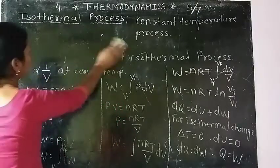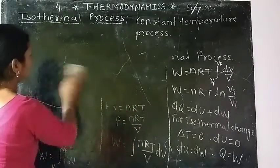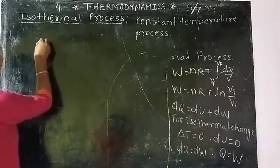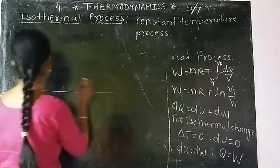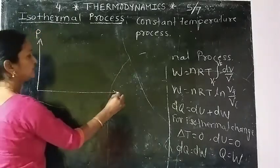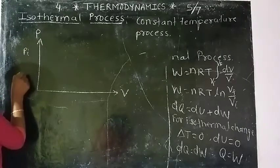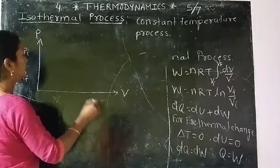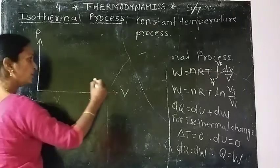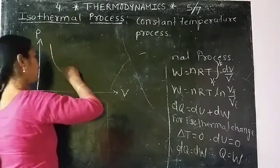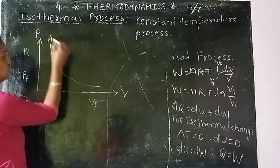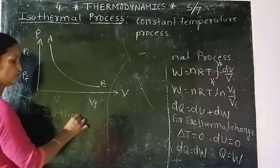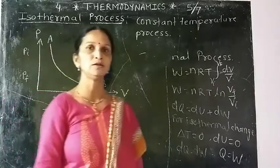The PV diagram for isothermal change — the curve representing a process at constant temperature — is known as an isotherm. On the diagram, the pressure axis is vertical and the volume axis is horizontal. As pressure decreases from P_I to P_F, volume increases from V_I to V_F. The resulting isotherm curve runs from point A (initial state) to point B (final state).